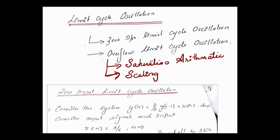Now, we are going to see about another type of oscillations called limit cycle oscillation. There are two types of limit cycle oscillation: one is zero input limit cycle oscillation and overflow limit cycle oscillation.